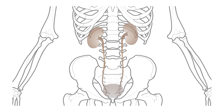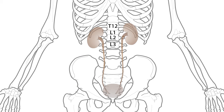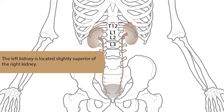The top pole of the kidneys are located laterally of the 12th thoracic vertebra, or T12, while the bottom pole of the kidneys are located laterally of the third lumbar vertebra, or L3. This means the kidneys are partially protected by the ribs. Also notice the subtle difference in location: the left kidney is situated slightly more superior than the right kidney.